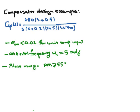Hello everybody. In this example, we need to design a controller in the frequency domain for a system provided as the transfer function: 280 times (S + 0.5) divided by S times (S + 0.2) times (S + 5) times (S + 70). The design requirements are: steady-state error smaller than 2% for unit ramp input, crossover frequency ωc equal to 5 rad/s, and phase margin bigger than 55 degrees. We will find that the best compensator option is a lead-lag compensator, or practical PID controller.